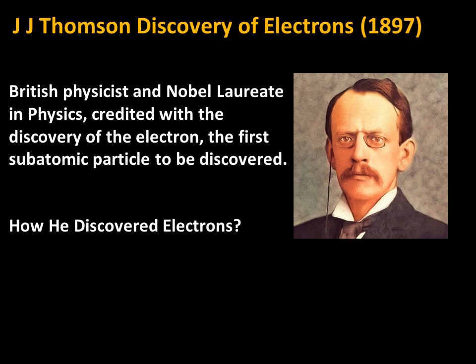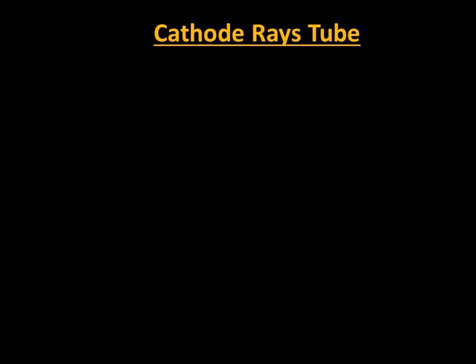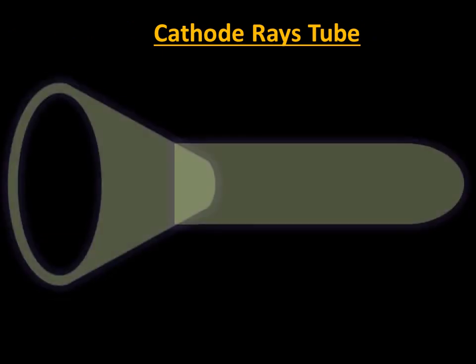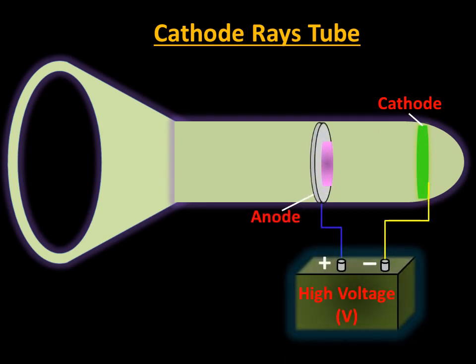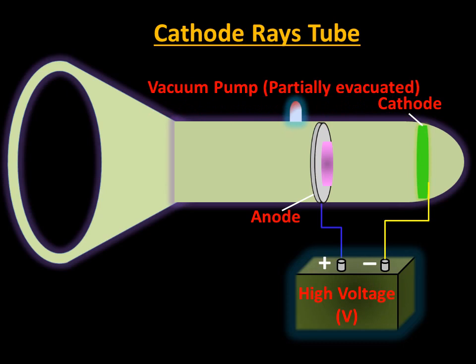J.J. Thomson was experimenting with the passage of electricity through an evacuated glass tube, which is known as a cathode ray tube. The cathode ray tube is a sealed glass tube from which most of the air has been evacuated. It consists of a cathode and an anode, which are connected to a high voltage source. A vacuum pump is used to evacuate the glass tube, so the tube is partially evacuated.